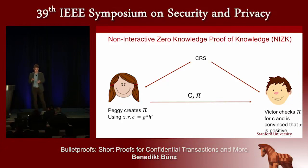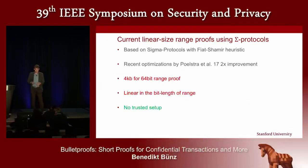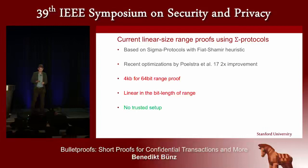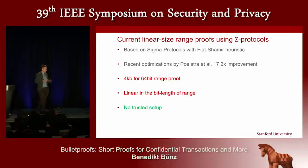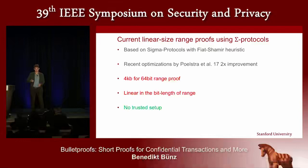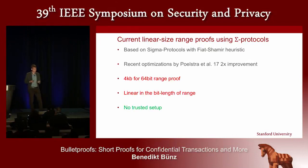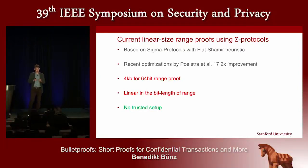This concrete scenario is called a range proof, because we're proving that a number is in a small range, which implies no overflows are possible. Currently, the range proofs used are based on sigma protocols and they're linear sized — linear in the bit length of the range. So to prove a number is between 0 and 2^64 minus 1, you need roughly 64 elements, which turns out to be about 4 kilobytes even with recent optimizations. The nice thing about sigma protocols is they have no trusted setup.